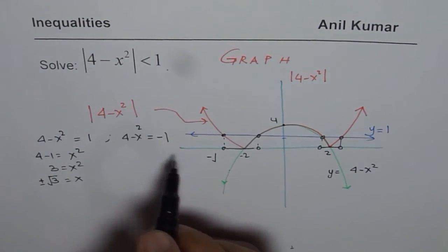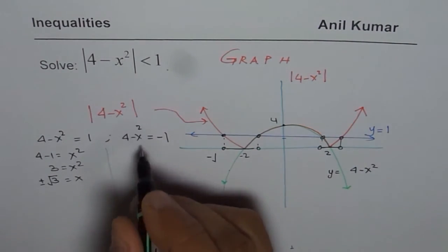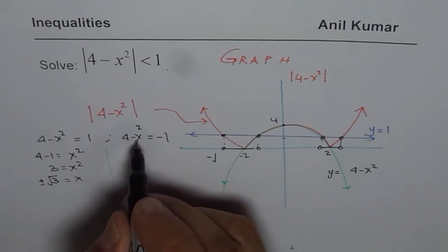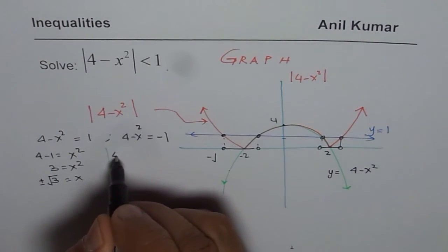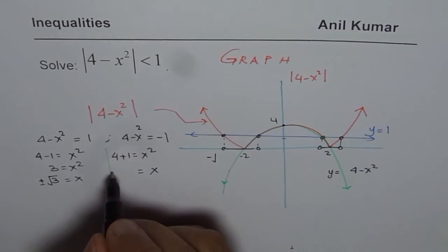Let's do this also. Then we will put the value. So let's do this one also. Here we have, we will bring one to this side. So it becomes 4 plus 1 equals to x squared, or x is equals to plus and minus square root of 5.